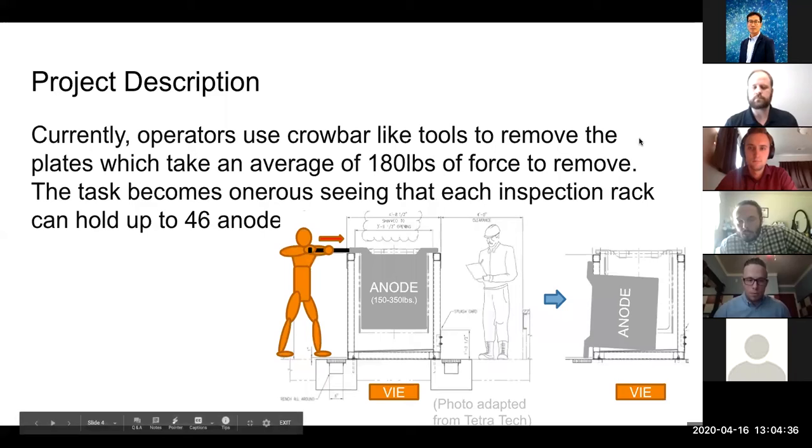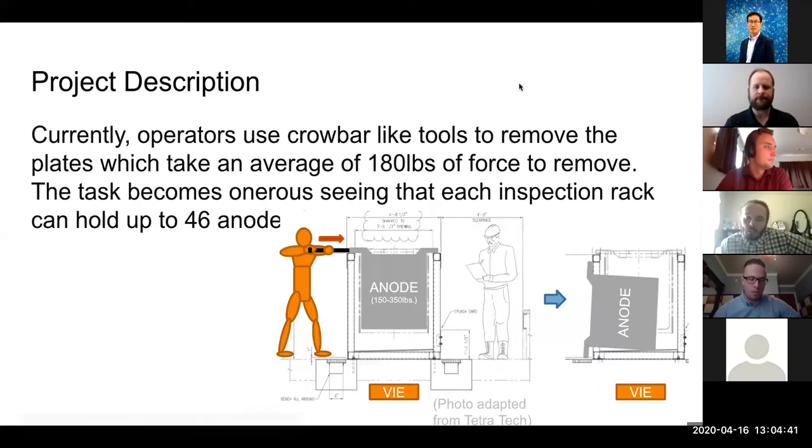The issue we were taking on was this anode removal process. These anodes weigh anywhere from 150 to 350 pounds and it was calculated to take around 180 pounds of force to remove. The issue is that there's 46 anodes on one rack, so this can become quite the task in a day.